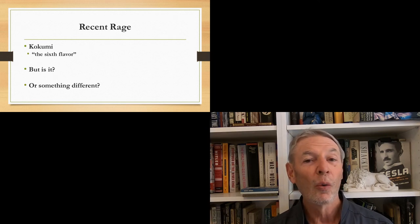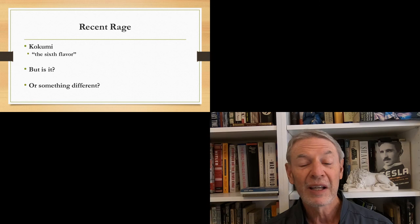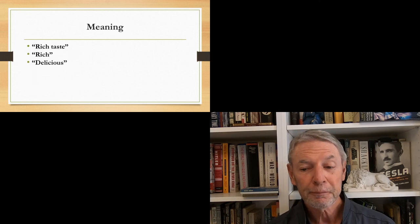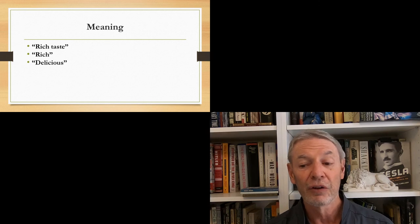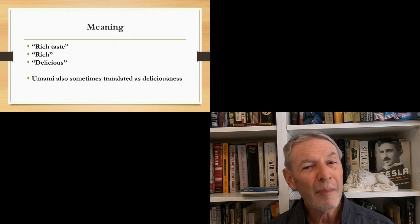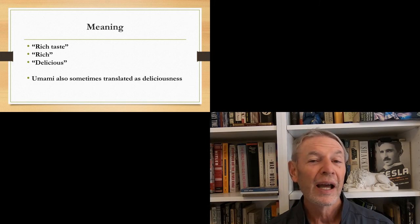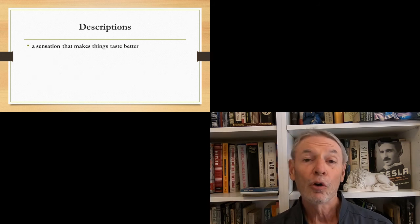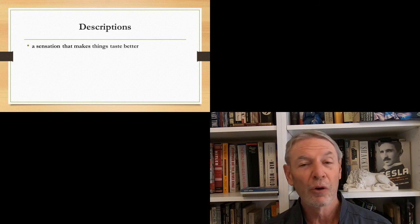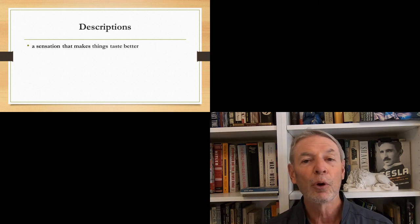We're going to explore in this video whether it really is the sixth flavor or not, and if it isn't, what is it? Is it the sixth flavor or is it something different? The meaning of the word Kokumi in Japanese is loosely translated into English as rich taste or rich or delicious. But the problem is that Umami is also sometimes translated as deliciousness.